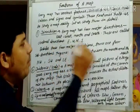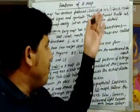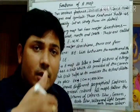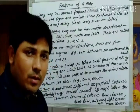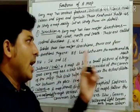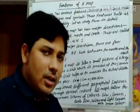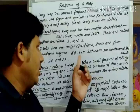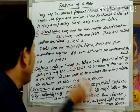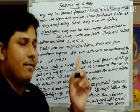Besides these four major directions, there are four sub-directions. If you look between the main directions, there are four sub-directions. For example, north-east lies between the north and the east direction. Similarly, north-west lies between the north and the west direction.